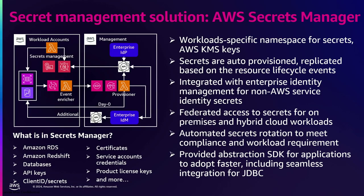To simplify adoption of secret integration, we wrote an SDK wrapper. Rather than just using the AWS SDK as-is, for example with a Java application connecting to a database through JDBC, we wrote a JDBC wrapper that talks to Secrets Manager, pulls the secret at runtime whenever a connection is required, and establishes the connection. If you don't have this kind of implementation yourself, you can refer to the GitHub repo at aws/aws-secretsmanager-jdbc for a reference implementation.